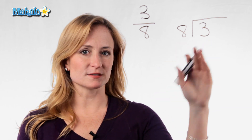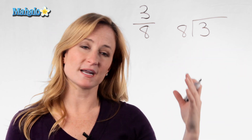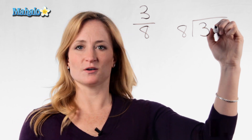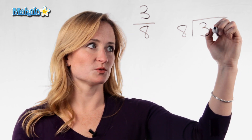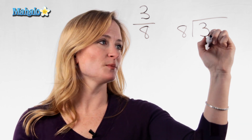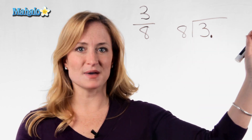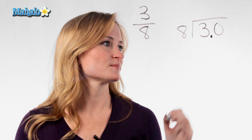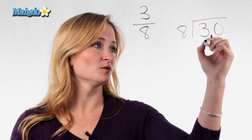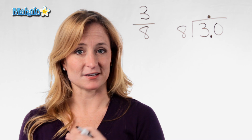Now 8 can't go into 3, so we're going to need to add some substance to our number — we want to add some zeros. But you can't just add a zero without turning it into a decimal, because that 3 would become a 30. So you need to make sure you put a decimal, and now you can add as many zeros as necessary. Before you start the long division problem, I recommend that you move the decimal up to your answer so that you don't forget it later.